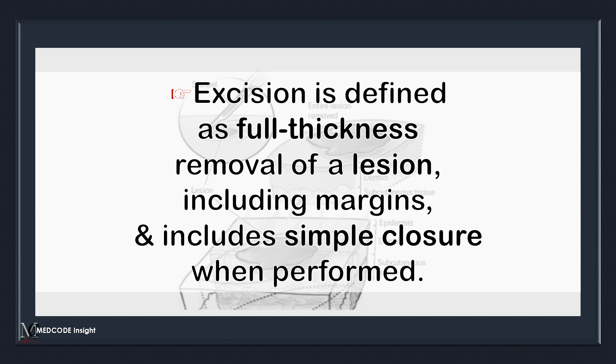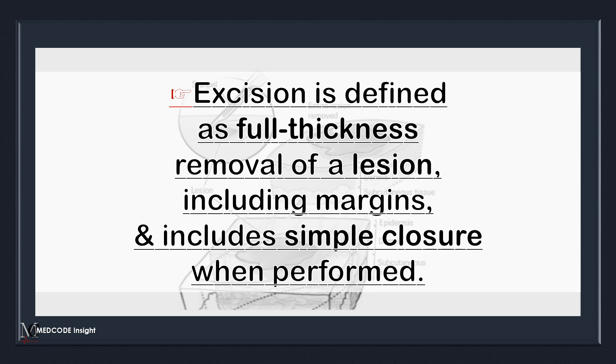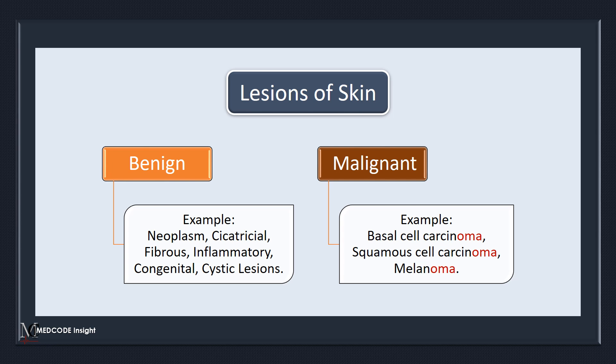Excision is defined as full thickness removal of a lesion including margins, and includes simple closure when performed. There are two types of skin lesions: benign and malignant. Malignant cells are cancerous and often end with the suffix OMA, as seen in basal cell carcinoma, squamous cell carcinoma, and melanoma. Keep this key point in mind when eliminating options for excision involving benign or malignant cells.